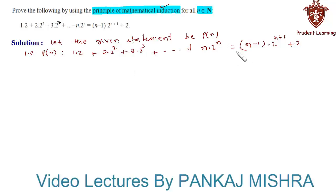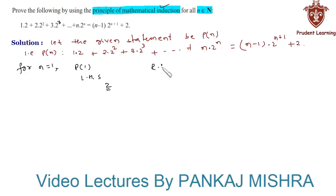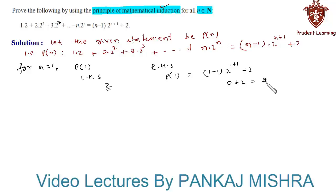In our first step, we verify whether the equation is true for n = 1. For n = 1, the left hand side is 1·2 = 2. On the right hand side, P(1) = (1−1)·2^(1+1) + 2 = 0·4 + 2 = 2. Since LHS equals RHS, P(1) is true.